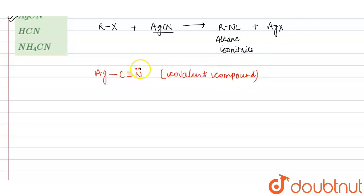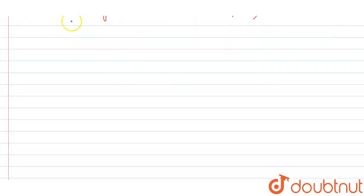So nitrogen contains a lone pair which attacks on the alkyl group, and the halide group acts as a leaving group, and your product is formed. Here, let's take an example of this.